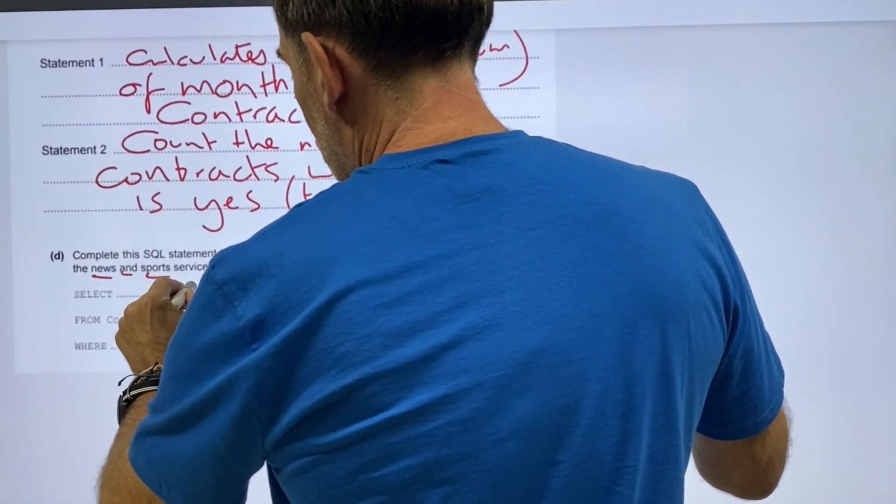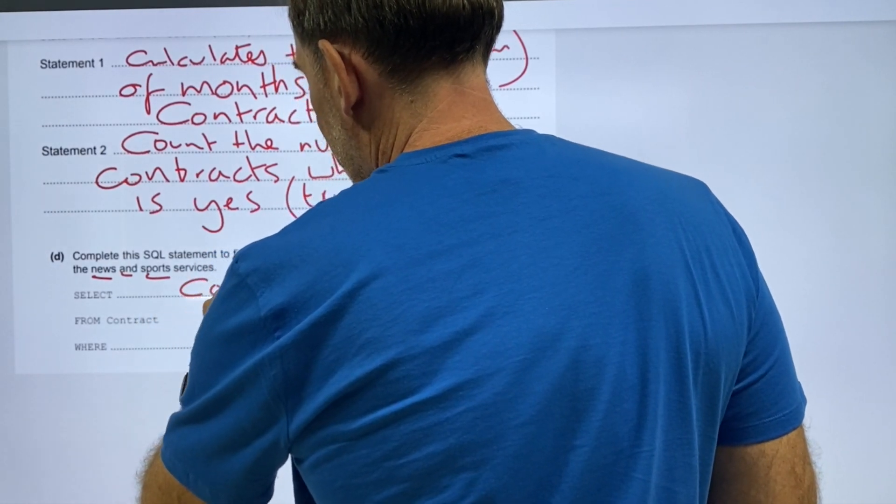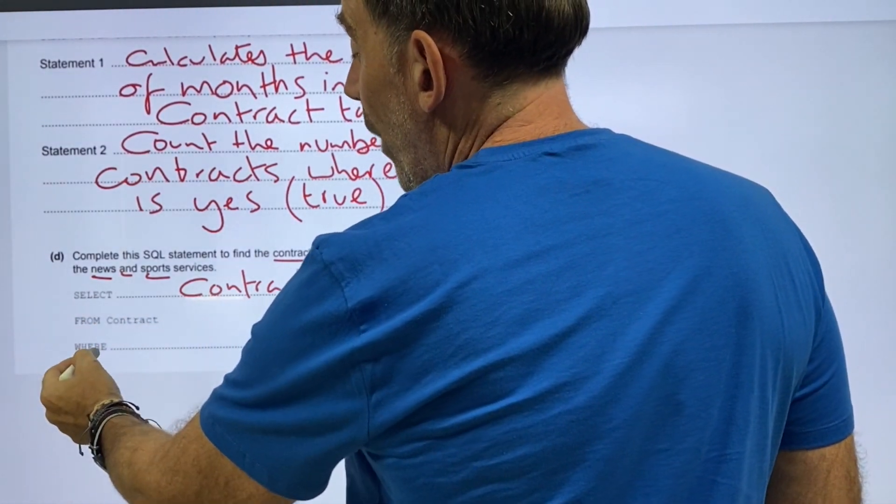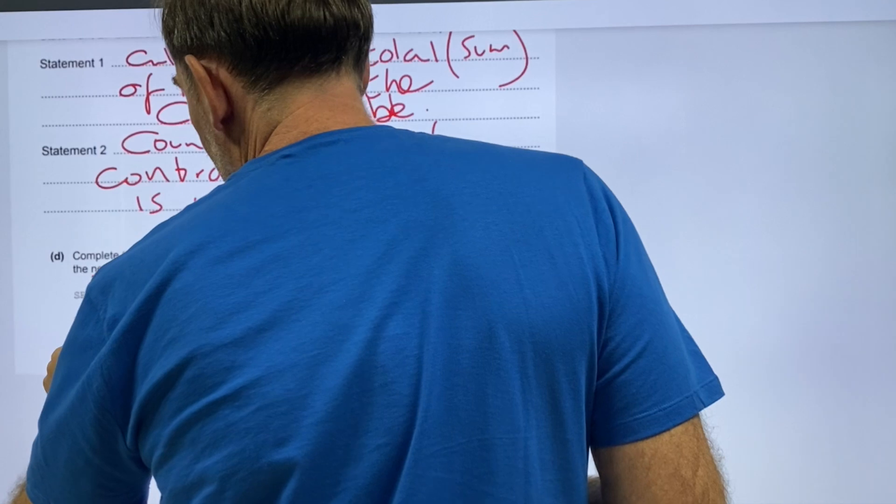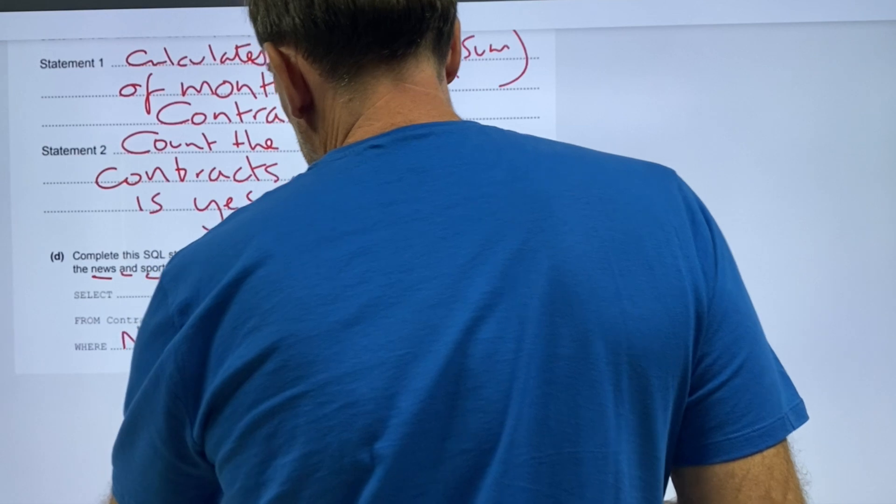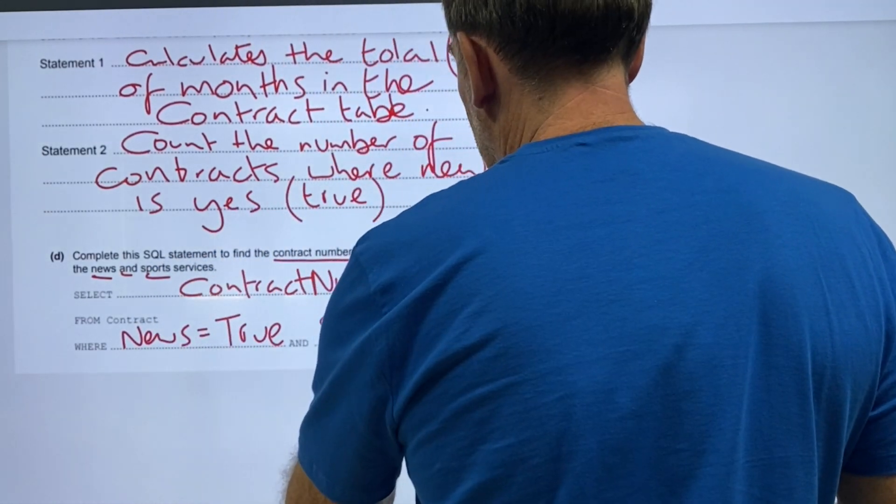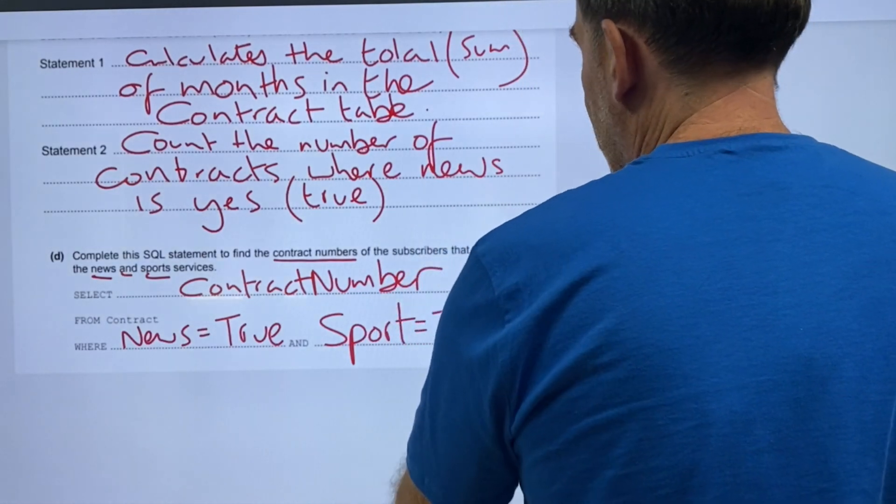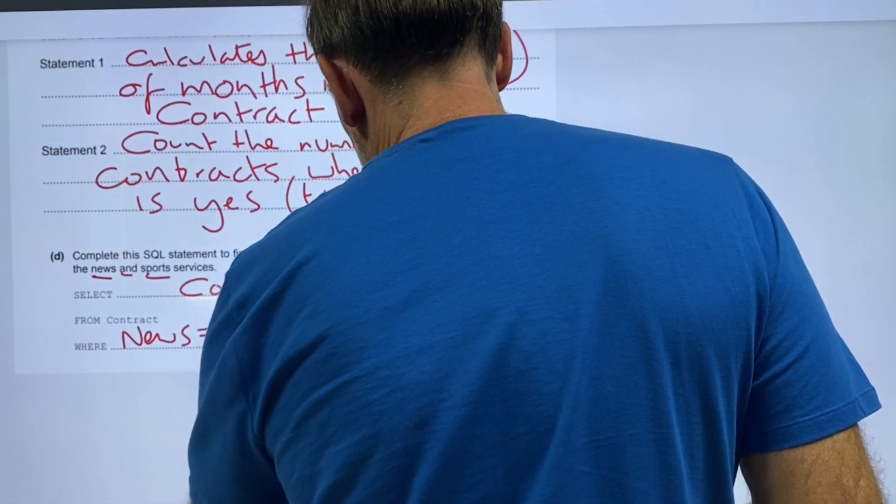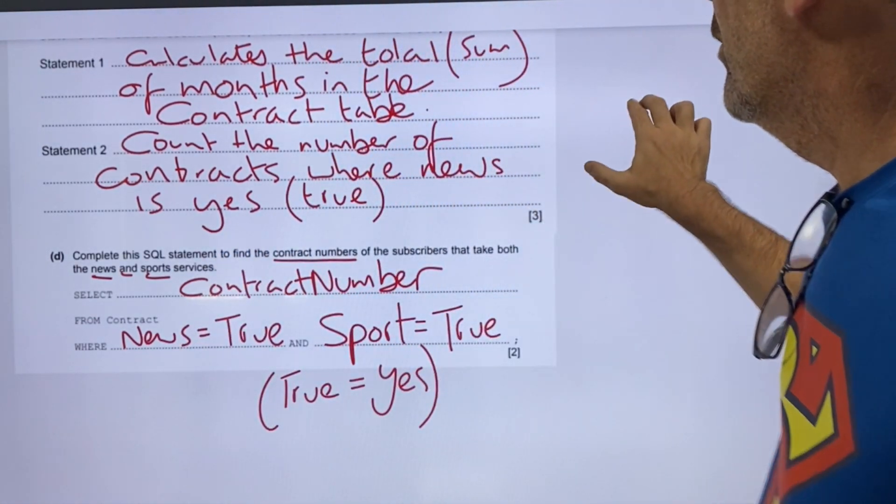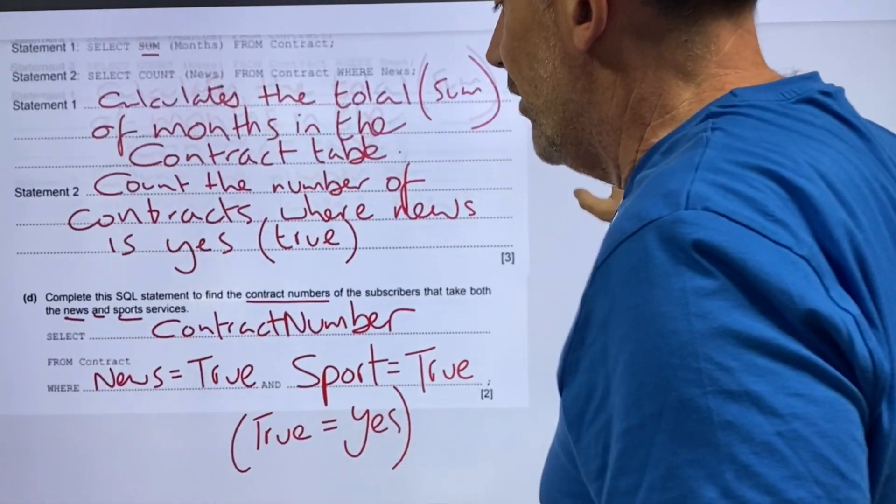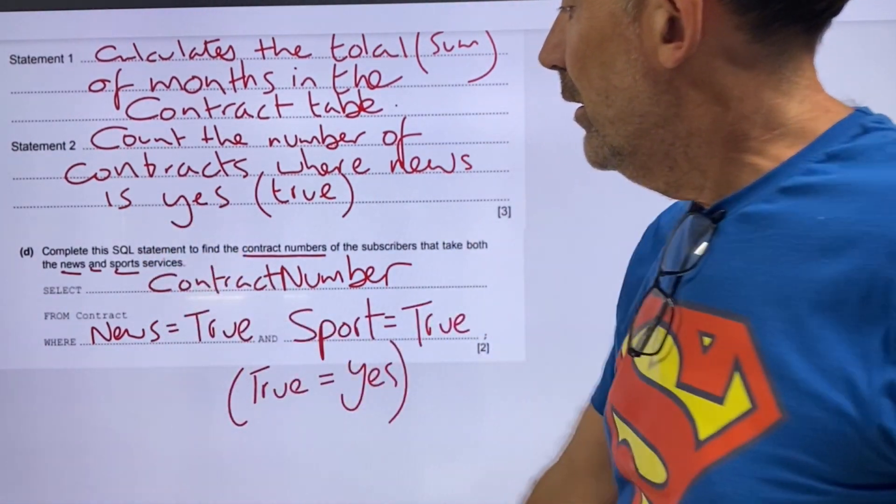Select contract number from contract where news is yes equals equals true and sport equals true. Brackets. And true equals yes. I'm just going to put that in just so we know. Because it is defined as yes and no. But obviously, yes equals it's true, like I put here.